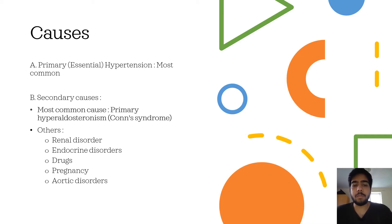The most common cause of secondary hypertension is Conn's syndrome. There can be other causes as well, which include renal disorders, endocrine disorders, drugs, pregnancy, and aortic disorders.